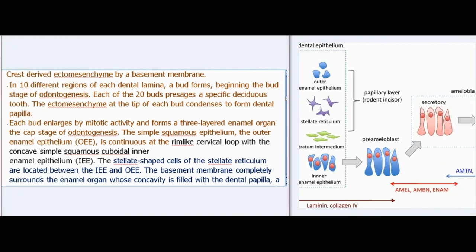In 10 different regions of each dental lamina, a bud forms, beginning the bud stage of odontogenesis. Each of the 20 buds presages a specific deciduous tooth. The ectomesenchyme at the tip of each bud condenses to form a dental papilla, and each bud enlarges by mitotic activity to form a three-layered enamel organ — the cap stage of odontogenesis.